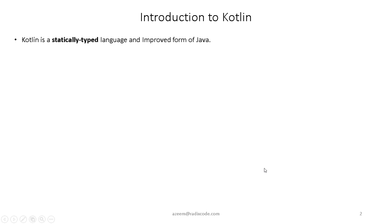Kotlin language is a statically typed language, which means that the type of every expression is known at compile time. The compiler will validate the methods and fields that you try to access using an object. In statically typed languages, the compiler knows about your methods and fields of your object, and if you try to access some field that does not exist on your object, then it will generate an error.